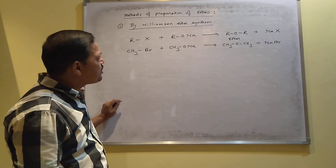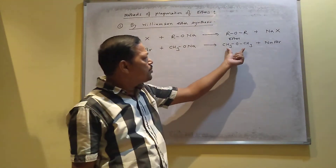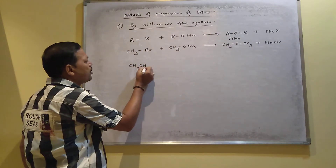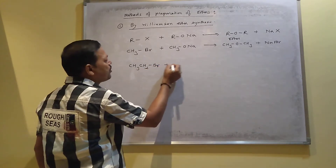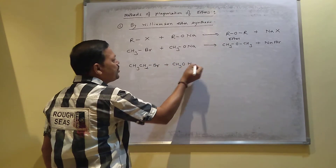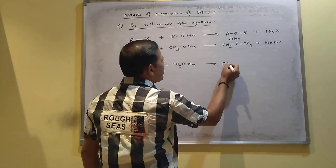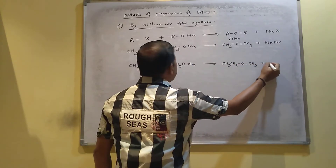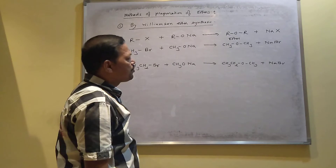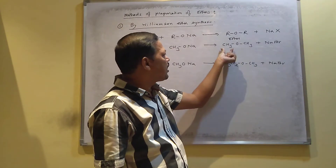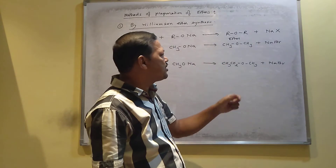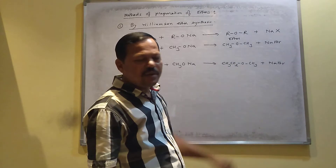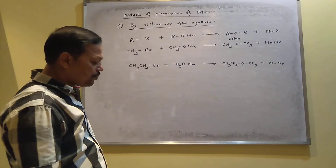Using this reaction, you can prepare both symmetrical and unsymmetrical ethers. If the haloalkane is bromomethane and the alkoxide is sodium methoxide, it produces methoxymethane — here both sides contain the same alkyl group, so this is a symmetrical ether. When both sides contain different alkyl groups, these are called unsymmetrical or mixed ethers.